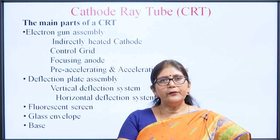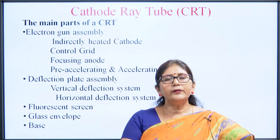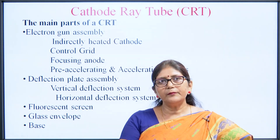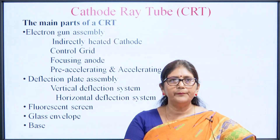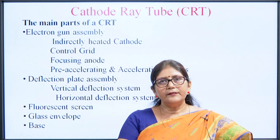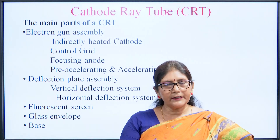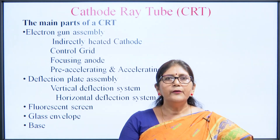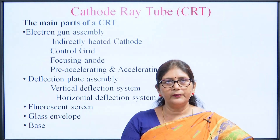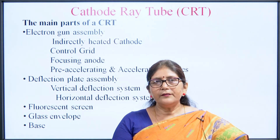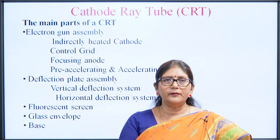The main part of the CRT is the electron gun assembly. The components of a CRT are: electron gun assembly, deflection plate assembly, fluorescent screen, glass envelope, and the base. In the electron gun assembly, the basic components are an indirectly heated cathode, control grid, focusing anode, pre-accelerating anode, and accelerating anode.